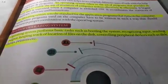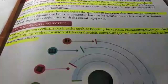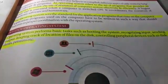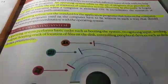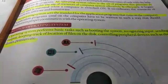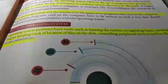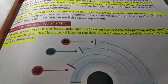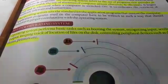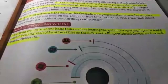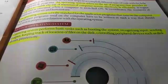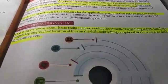The Operating System also recognizes the input, sends the output, and keeps a track of the files that are located on the disk. It also controls the devices attached to it, which are also called peripheral devices. Some examples of peripheral devices are the monitor, the printer, and the keyboard.